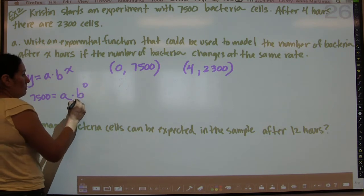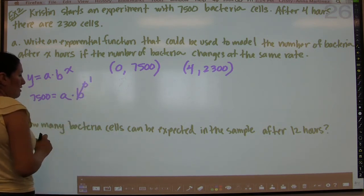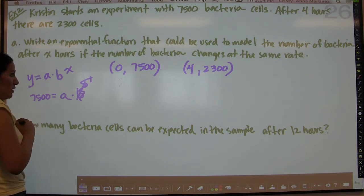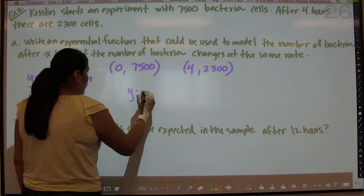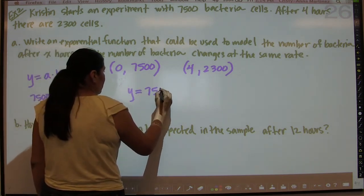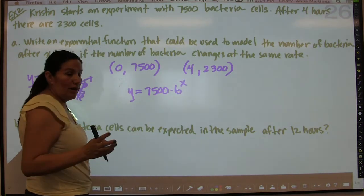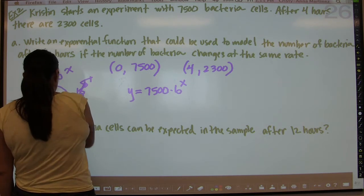b to the 0 power is 1. So now that's gone. So if this is gone, it means that a equals 7,500. So far, we know that y equals 7,500 times b to the x. So we figured out what a was.